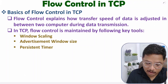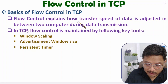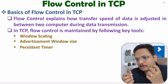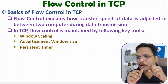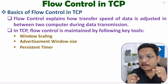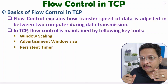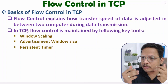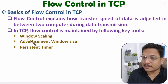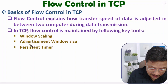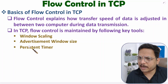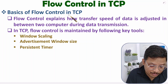Flow control explains how transfer speed of data is adjusted between two computers during data transmission. If one computer is slower compared to another, there has to be an adjustment of speed. The second scenario is also possible: if data transmission is happening at lower speed and resources have higher capabilities, then the transmission speed can be increased. In TCP, to maintain flow control, three tools are essential: first is window scaling, second is advertisement window size, and third is persistent timer. I'll explain these three tools with practical examples.